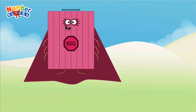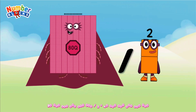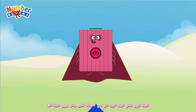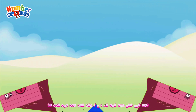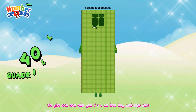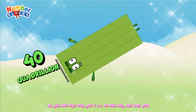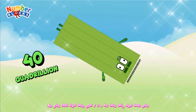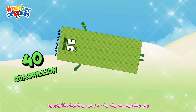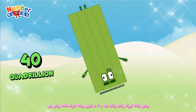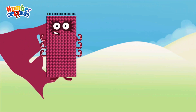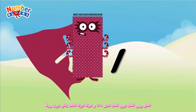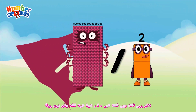Eighty quadrillion divided by two equals forty quadrillion. Eight hundred quadrillion divided by two.